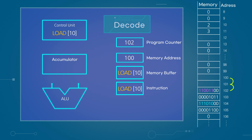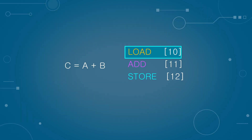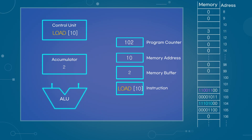The instruction stored in the instruction register is transferred to the control unit for interpretation. This step is called the decode phase. Since this instruction commands the system to read data from address 10, the value 10 is sent to the memory address register, which retrieves the data from memory address 10 and stores it in the memory buffer register. The value stored at address 10 is not an instruction but data, so it is stored in the accumulator register. With this, one line of the program has been executed. To process the next line, the address stored in the program counter is fetched, the next address is loaded into the memory address register, and the information at that address is retrieved into the memory buffer register.